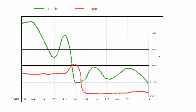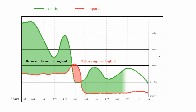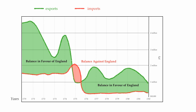Now I'll fade out the vertical lines and shade in the balance of trade: the green area shows the balance in favor of England, the red area shows the balance against England. If the chart is being used to demonstrate the balance of trade before and after the Revolutionary War, it becomes clear it favored England quite a bit.